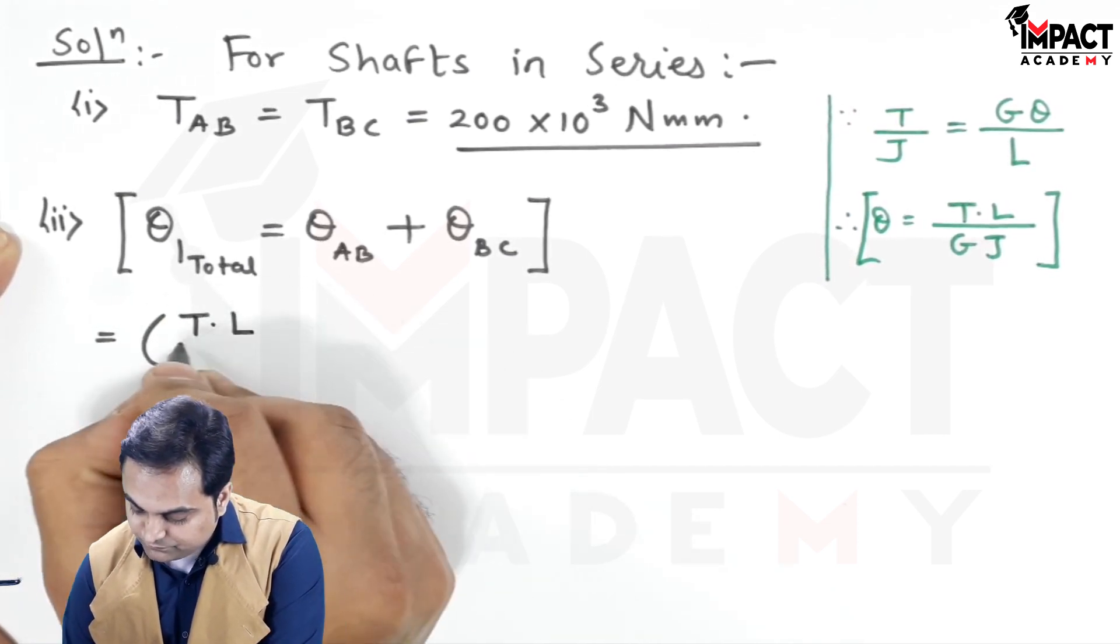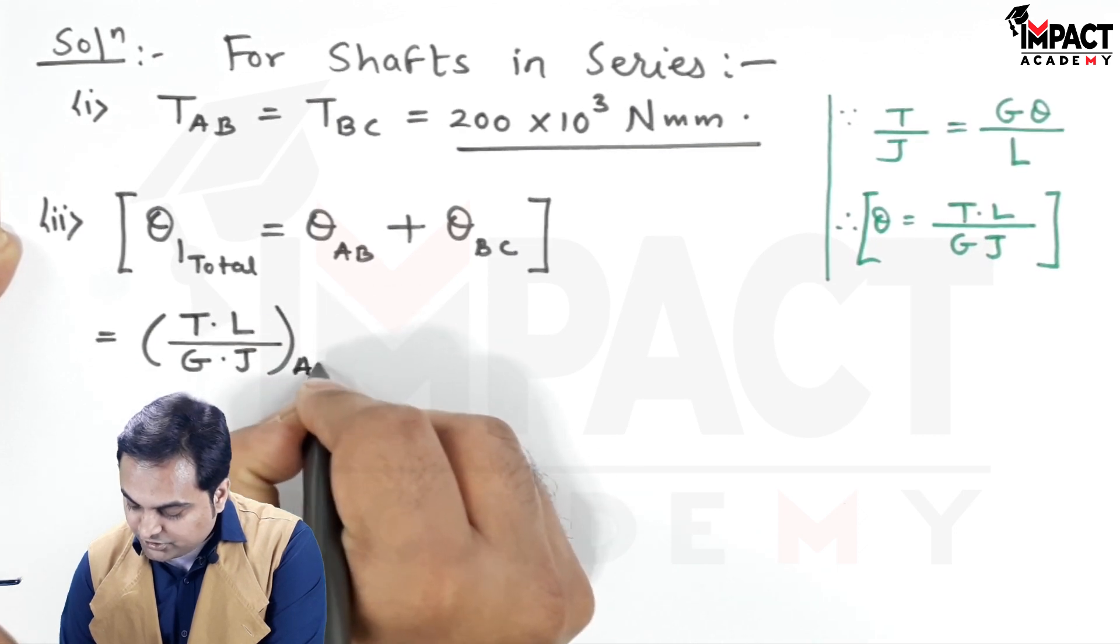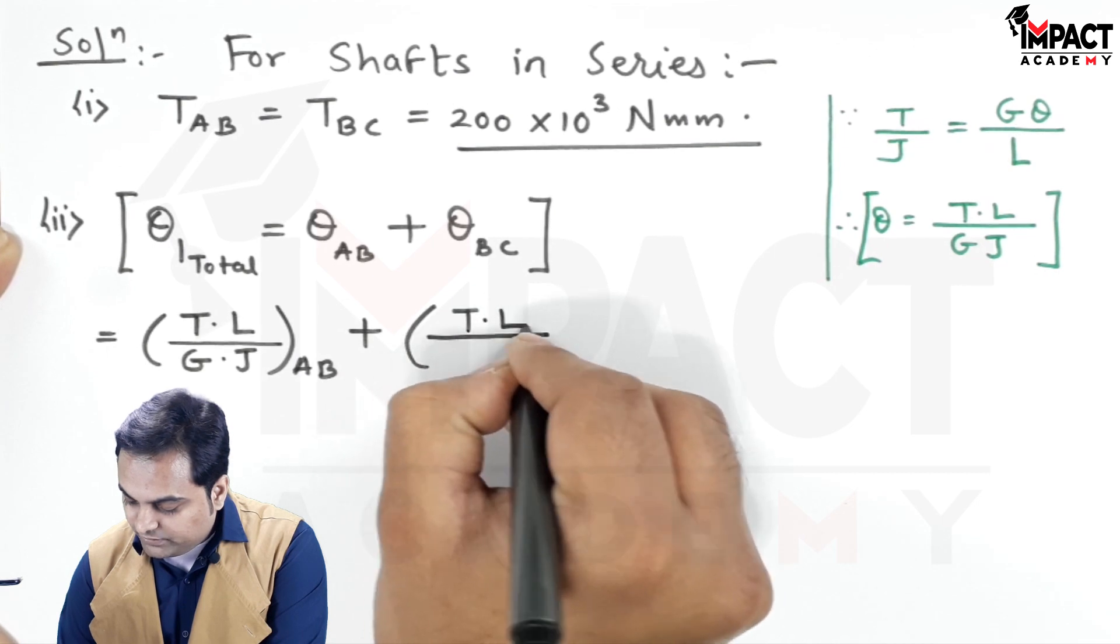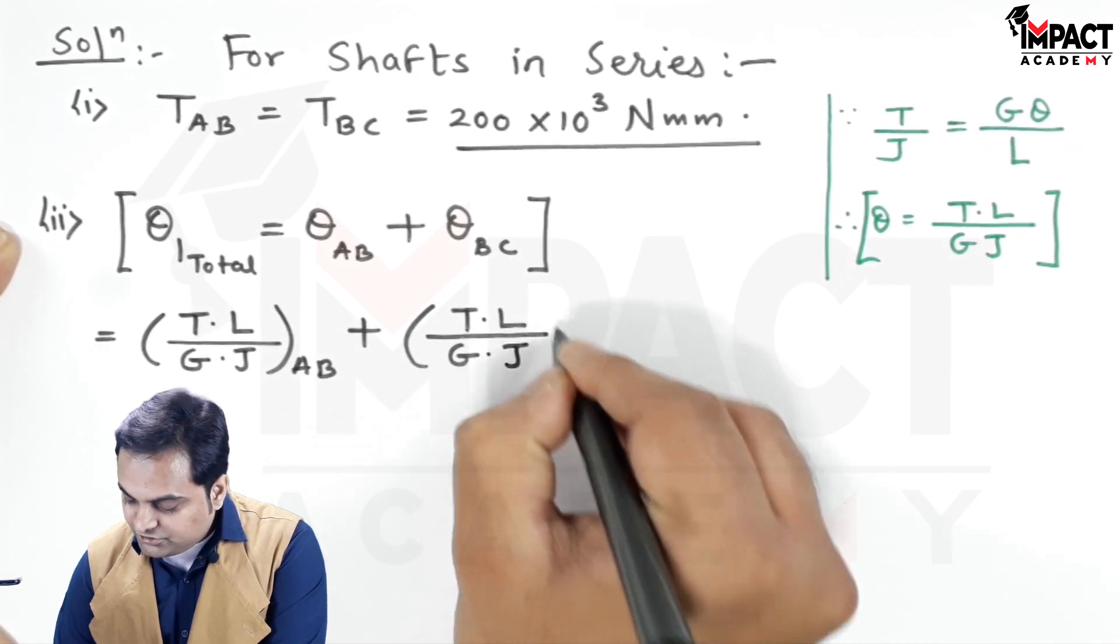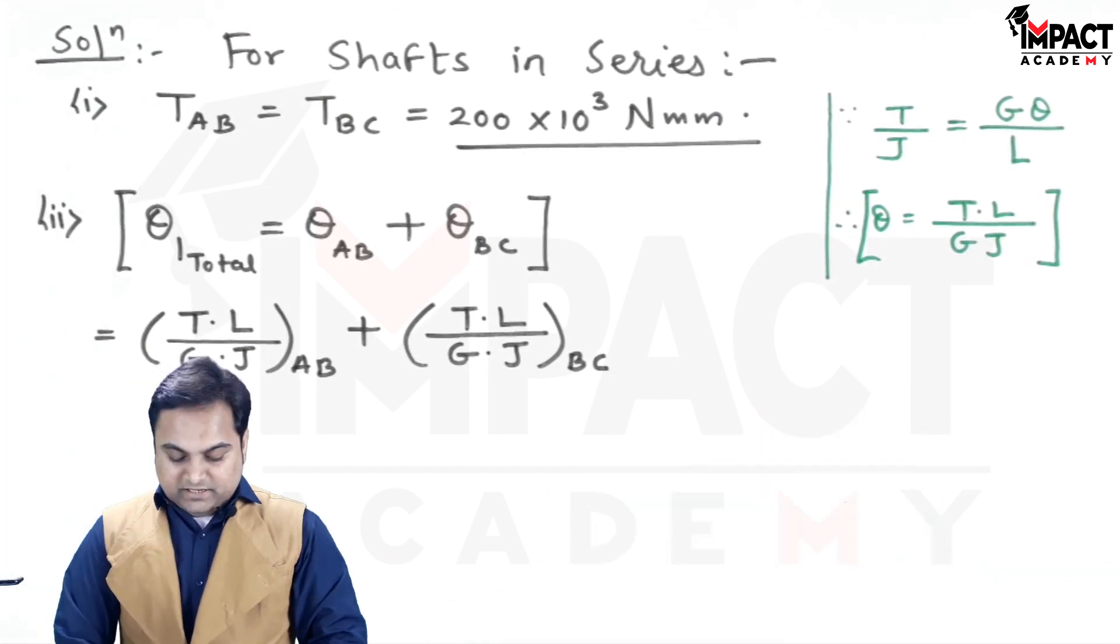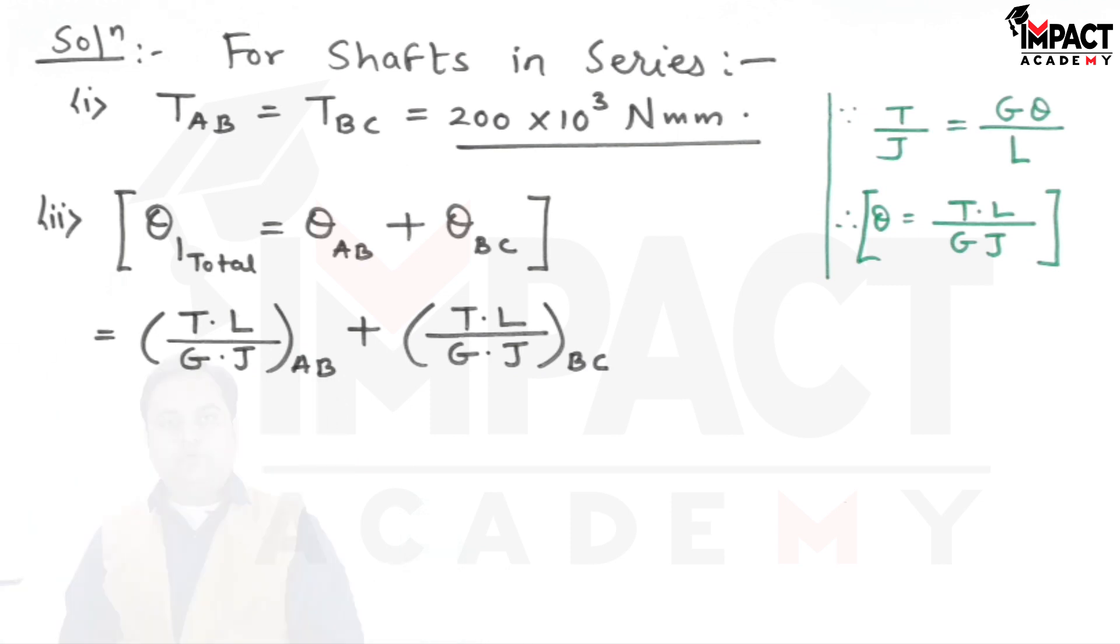For portion BC, θ_BC = TL/GJ. After reaching this point, J is the polar moment of inertia for both portions AB and BC. I can calculate it here.